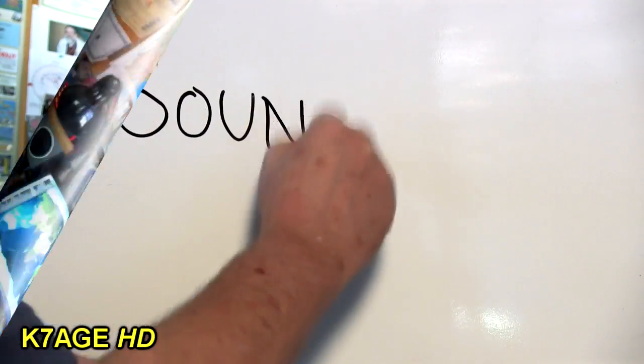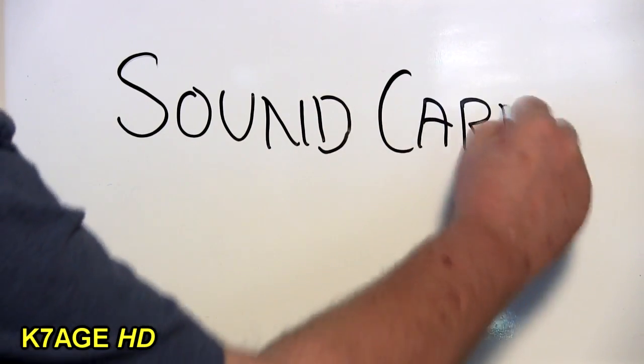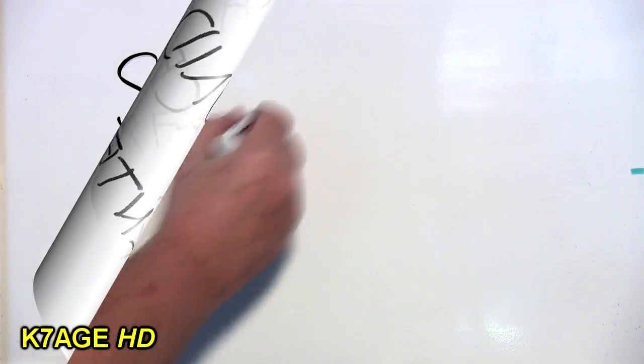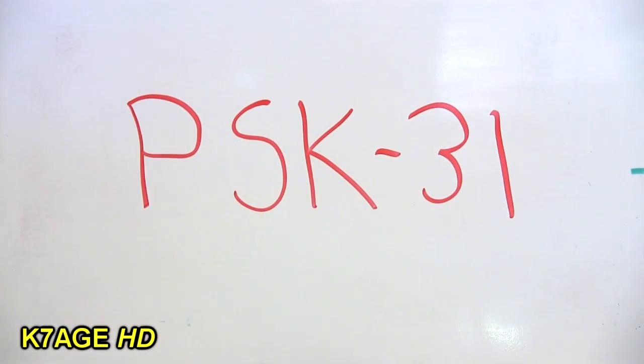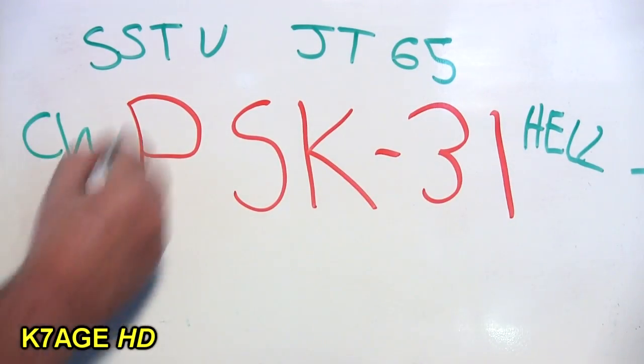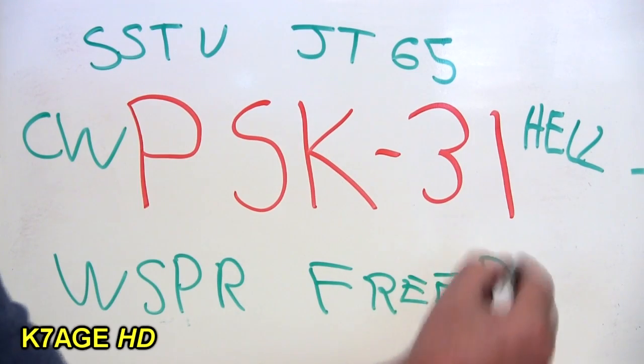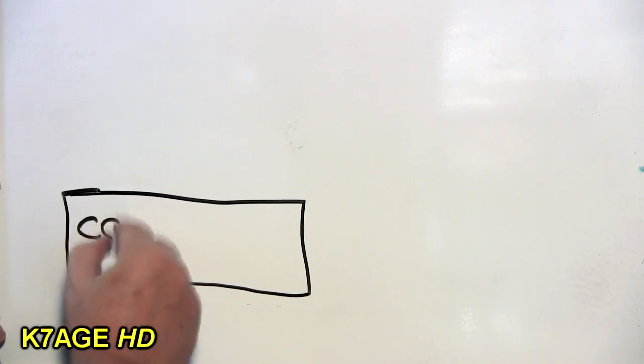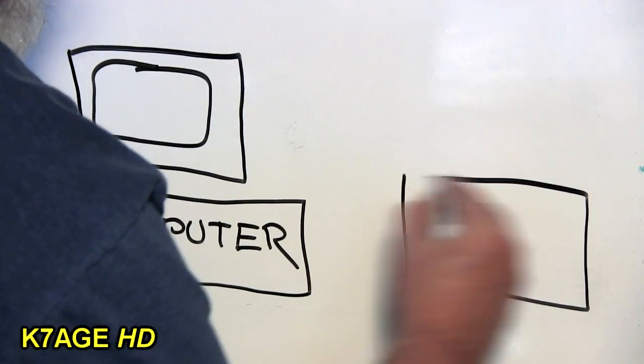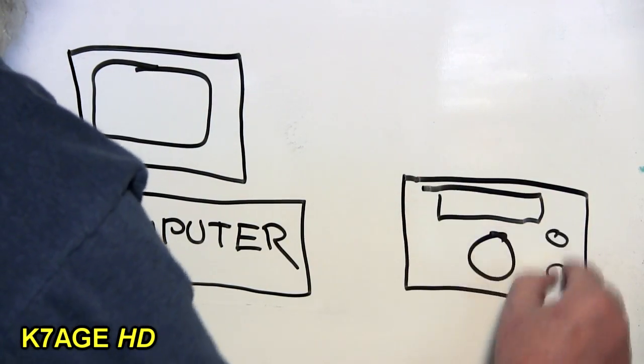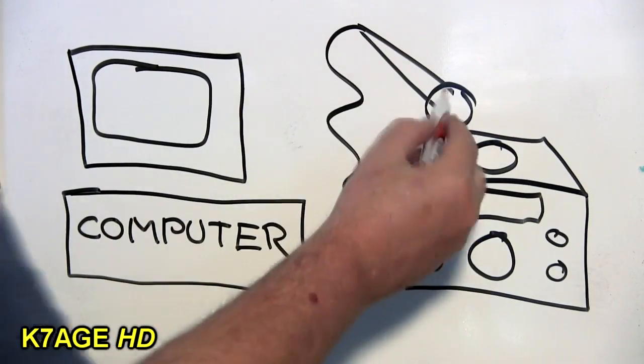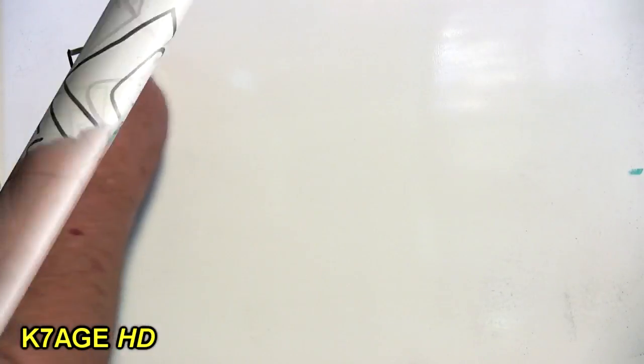With PSK 31 being such a popular digital mode this is what many people try for the first time. So this video is about the various sound card interfaces that you need to think about. Once you have the interface working for PSK 31 there's many other modes that are open to you to use. One of my most popular YouTube videos is where I show people how to receive PSK very quickly by pressing the computer's microphone by the radio speaker to pick up the audio.